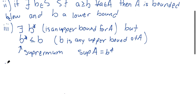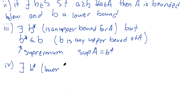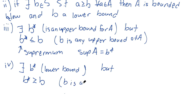And we have the exact same idea for the greatest lower bound. If there exists some B star which is a lower bound for A, but B star is greater than or equal to B, where B is any lower bound of A, then we'll call B star the greatest lower bound, or the infimum.